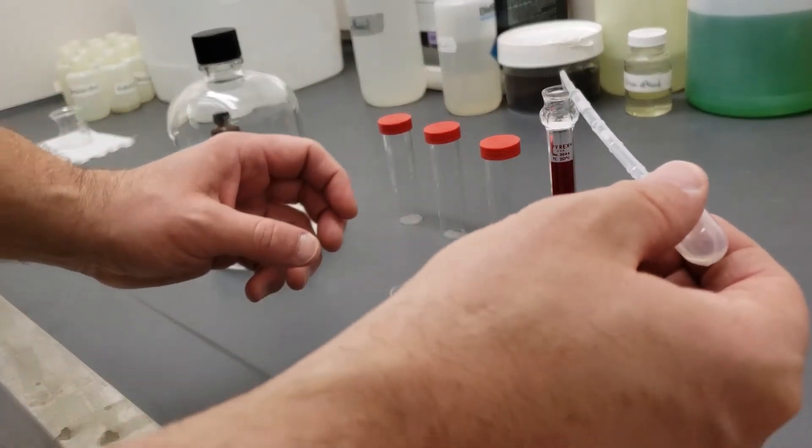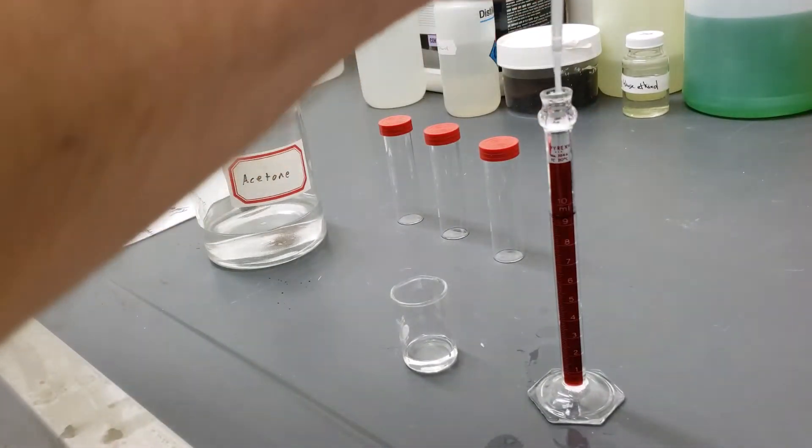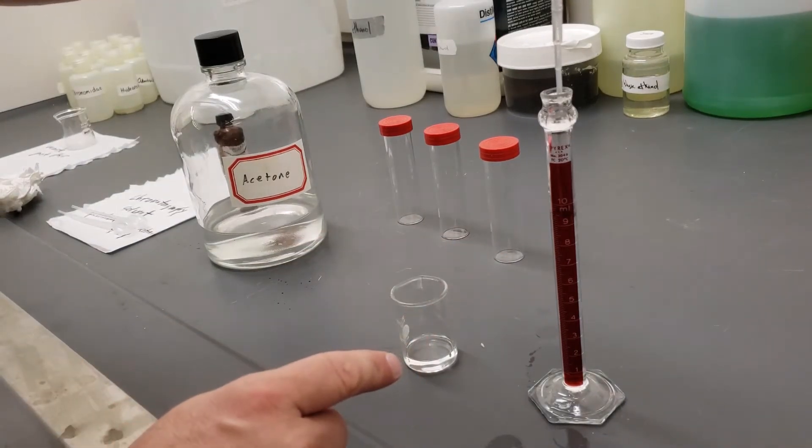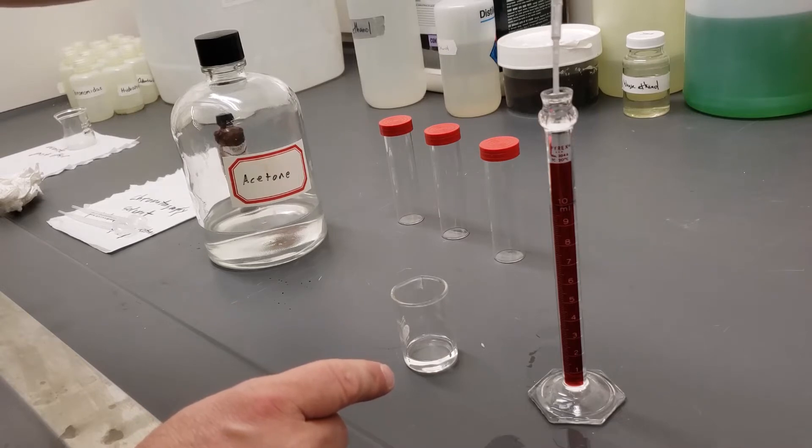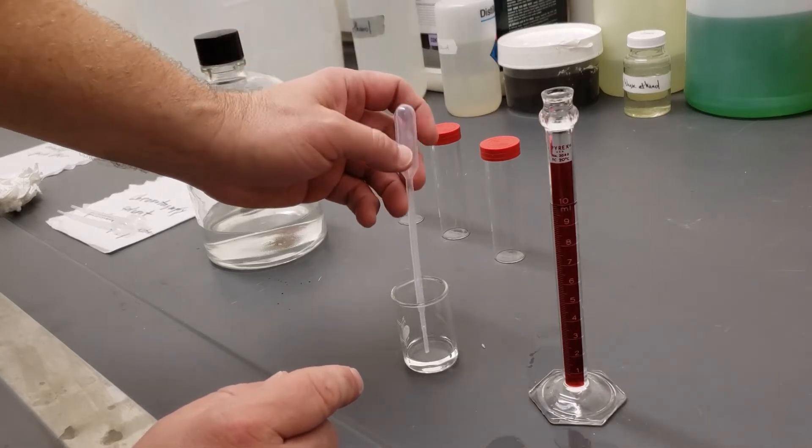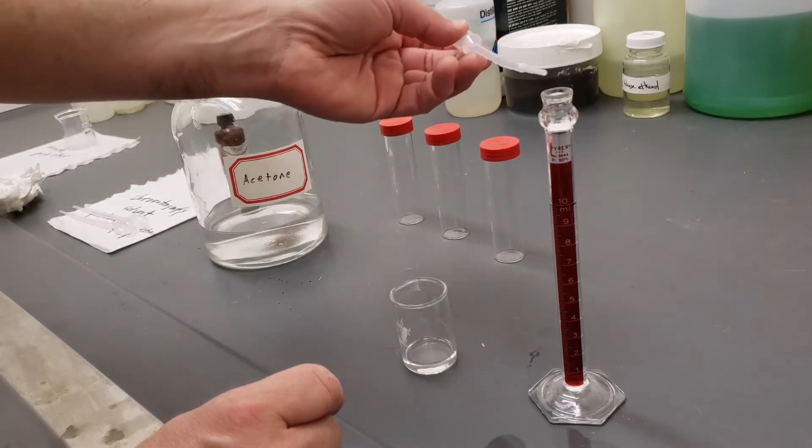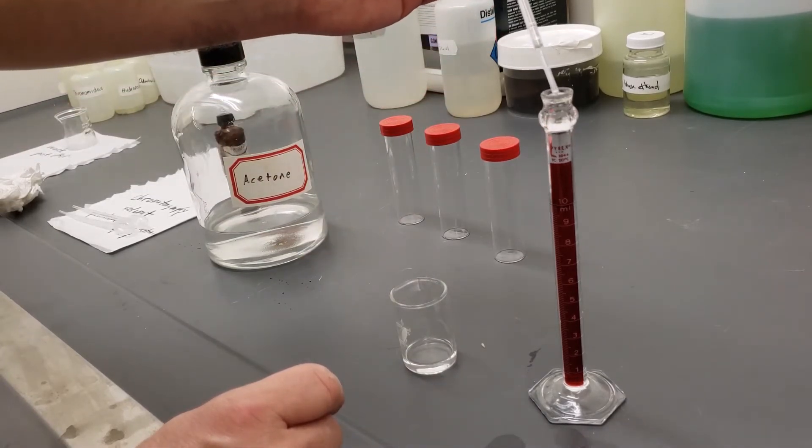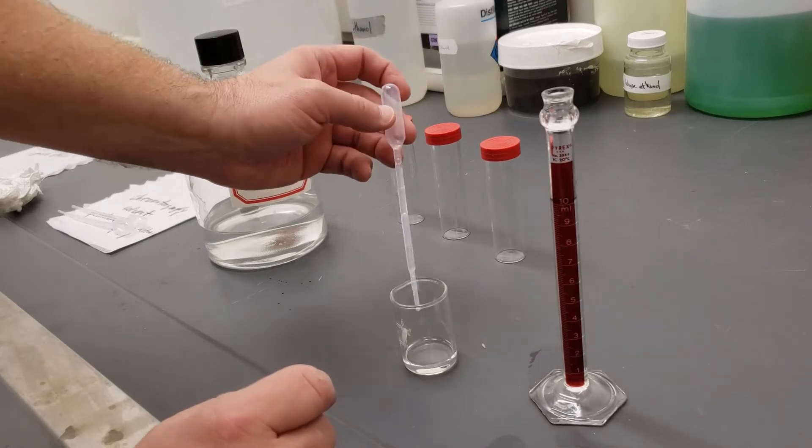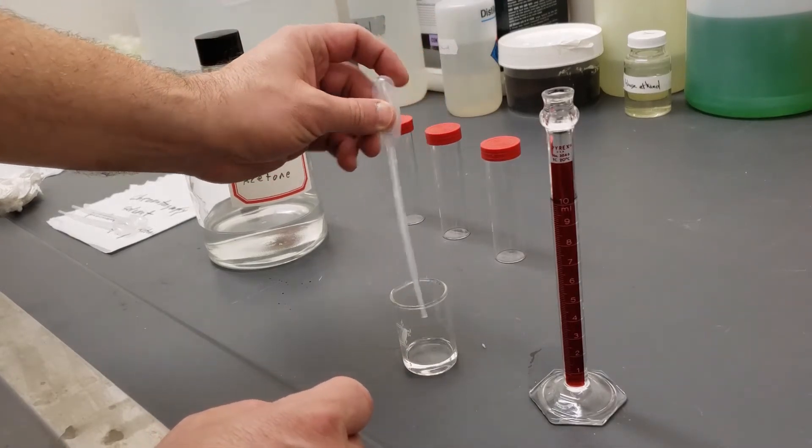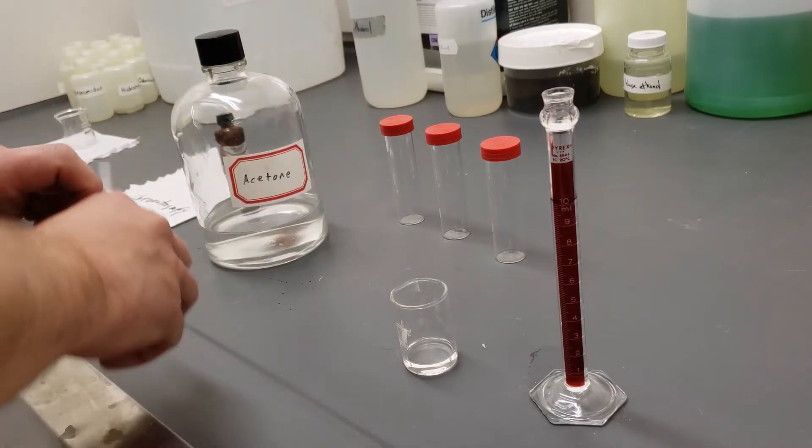Let's watch the graduated cylinder here. We're going up to nine to one. So I have nine mils of petroleum ether, one mil of acetone. That puts me right at 10 mils. So I've got a nine to one petroleum ether to acetone mixture.